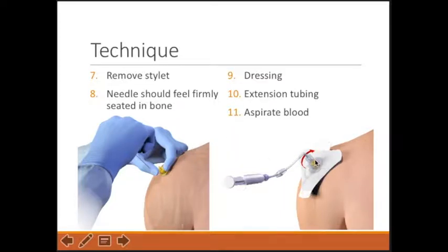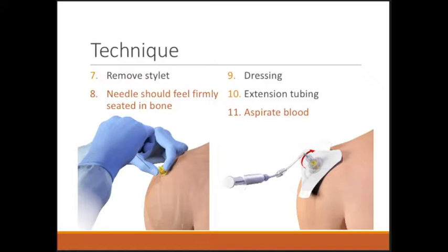Apply your dressing, attach your extension tubing, and then attempt to aspirate blood — these two steps confirm placement in bone. The needle shouldn't be flopping around on its own, and you should be able to aspirate blood to confirm you're in the bone marrow cavity. If you can't aspirate blood, that could be normal — the bone marrow is like jello and is hard to aspirate through. Try flushing the catheter first; that may liquefy the jello-like bone marrow matrix, after which you may be able to aspirate and confirm you're in the bone marrow and not the subcutaneous tissue.